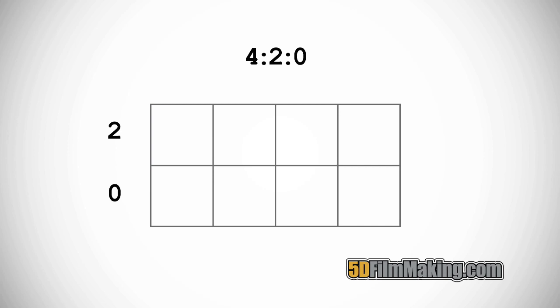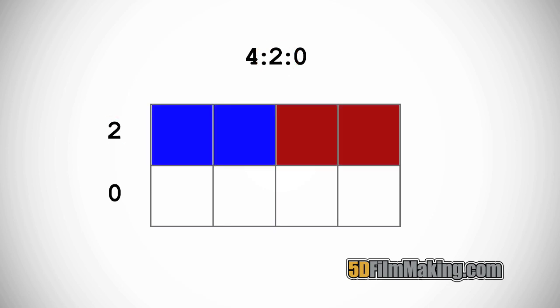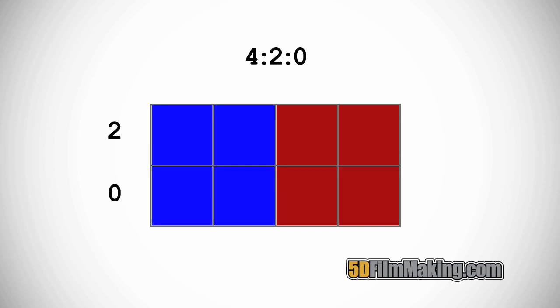Now let's take another step down and look at 420. We're still dealing with a 4 pixel wide reference block, and our A number is still 2. So every 2 pixels on the top row still share a chroma sample. But the B number is 0, which means that the pixels in the bottom row don't get anything of their own. They have to share with whatever is above them.